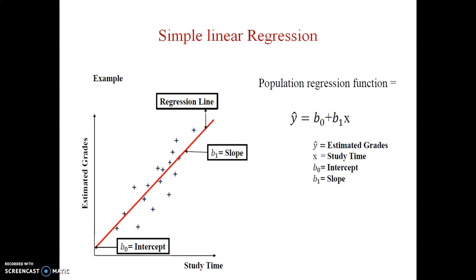Here we understand simple linear regression by this example. Simple linear regression will always have one dependent variable and one independent variable. Here dependent variable is y and independent variable is x. In this example they have given estimated grades and study time. Estimated grade is the dependent variable and study time is the independent variable. As study time increases, automatically estimated grades increase, giving certain magnitude. Beta 0 is the intercept and beta 1 is the slope.